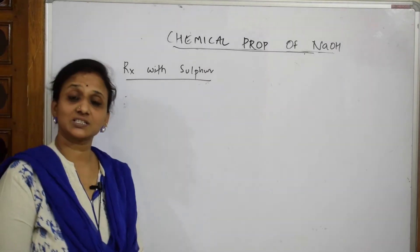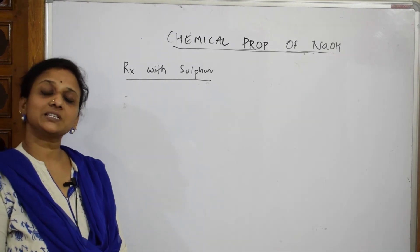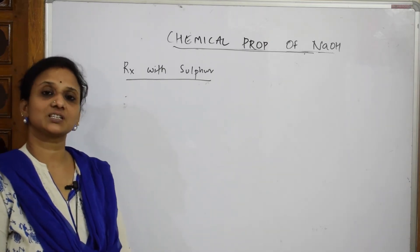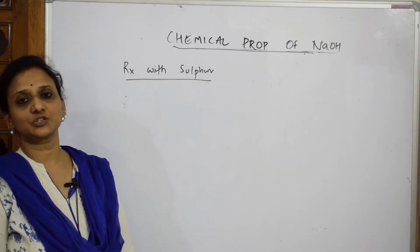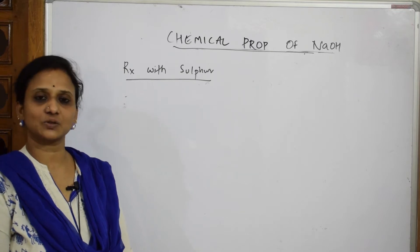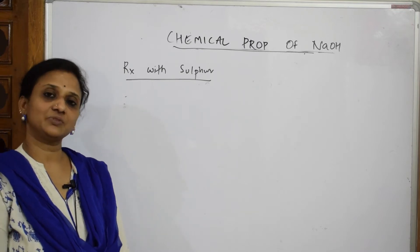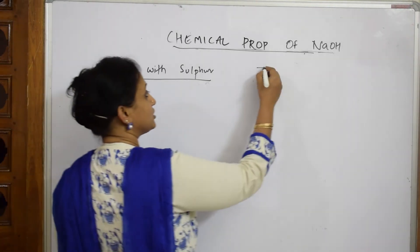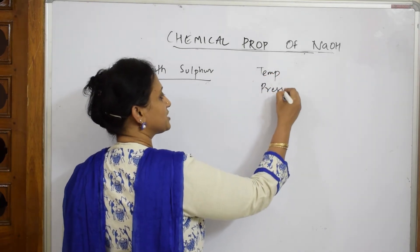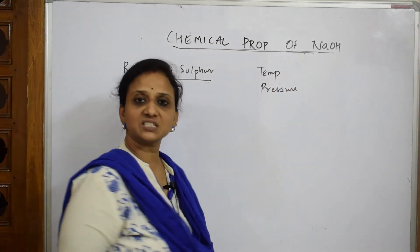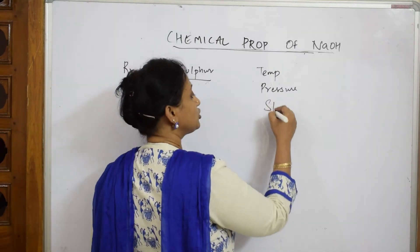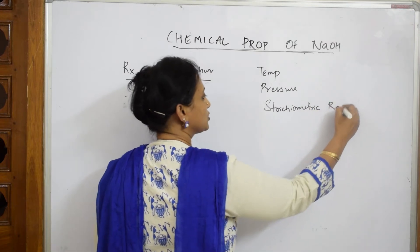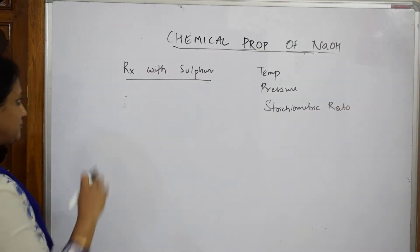Let's see this reaction. I already taught you the reaction with sulfur and sulfur dioxide. Now, whenever sodium hydroxide reacts, reactions depend on temperature, pressure, and stoichiometric ratio. We need to see that balanced reactions and stoichiometric ratio are important. There are two key conditions to consider.